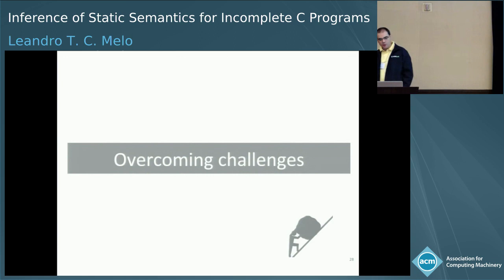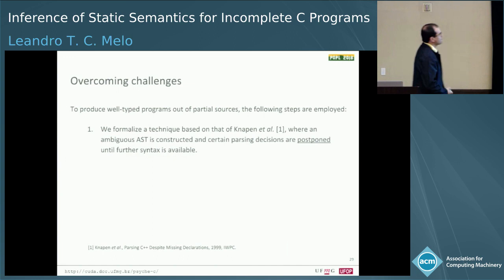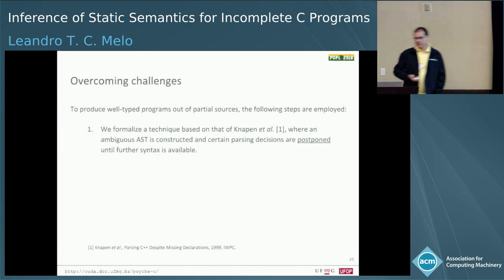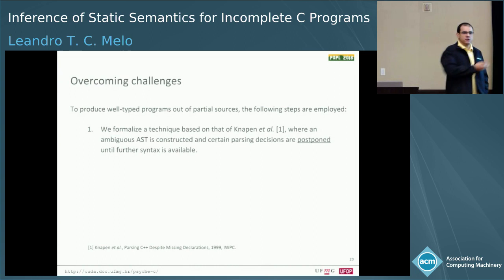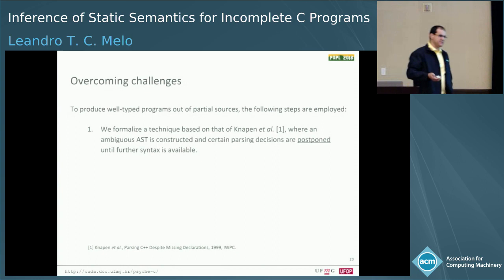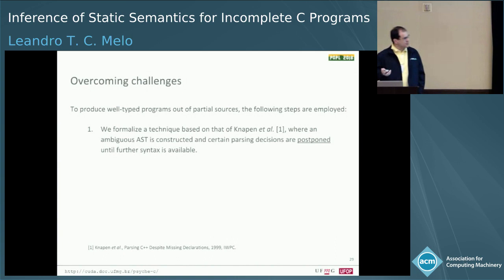So these are our contributions. I'm going to outline the big steps that we do. To deal with the syntactic ambiguity, what we do is postpone parsing decisions. We don't know what x star y is, so we continue parsing, create an ambiguous AST node, and keep going until we have information to resolve it. This is a technique that is not novel in C — IDEs and other tools do something similar — however, we have a good formalization to describe what is actually going on.